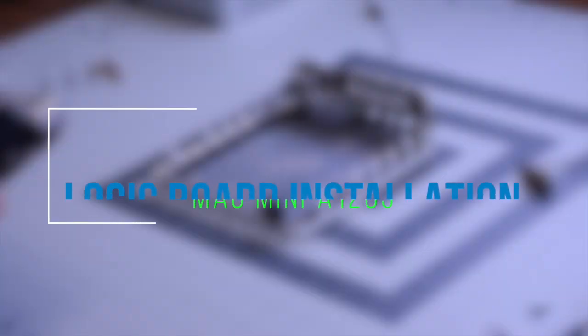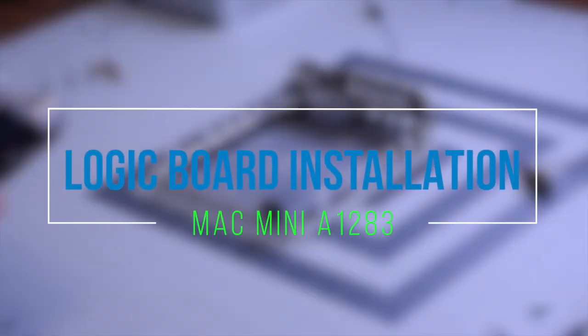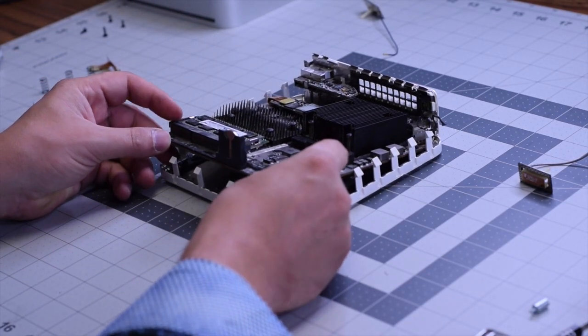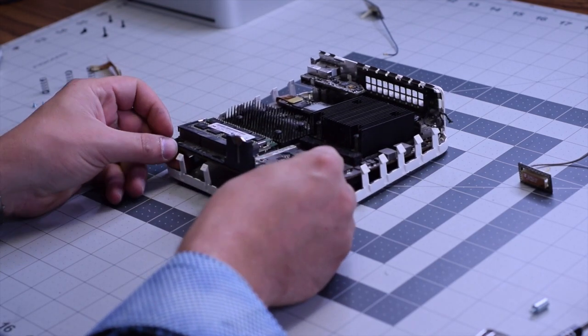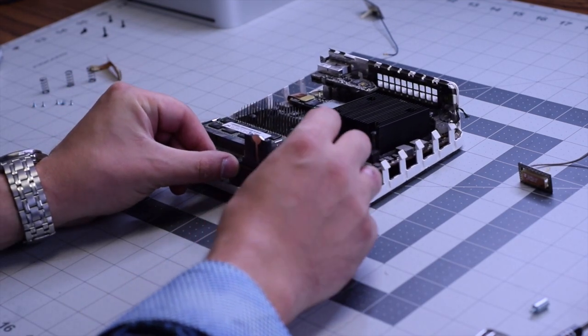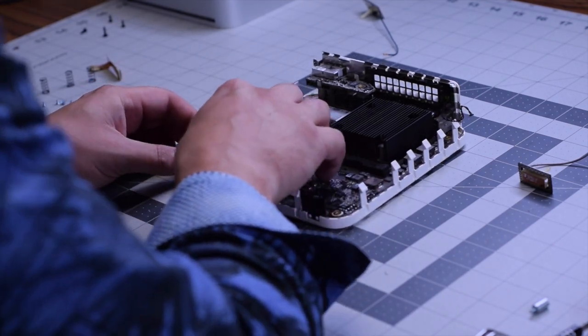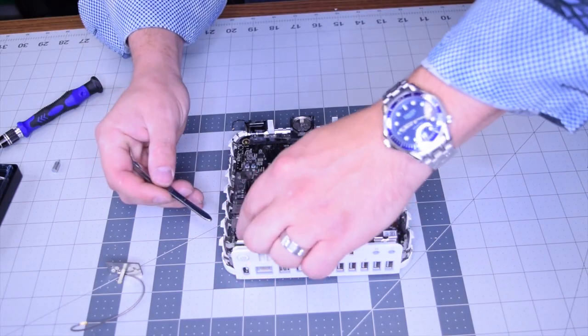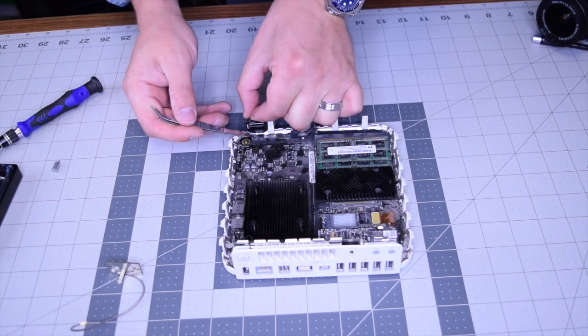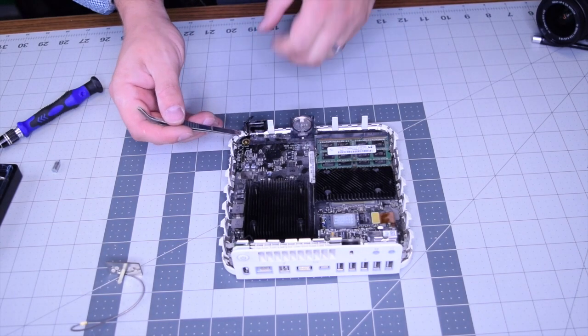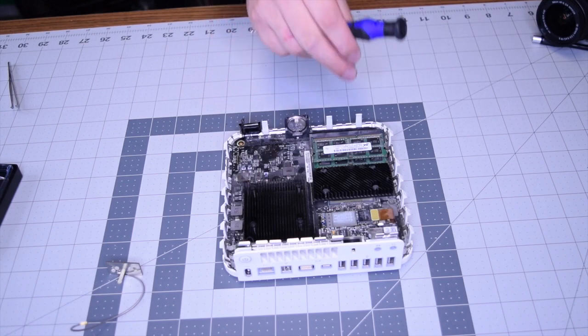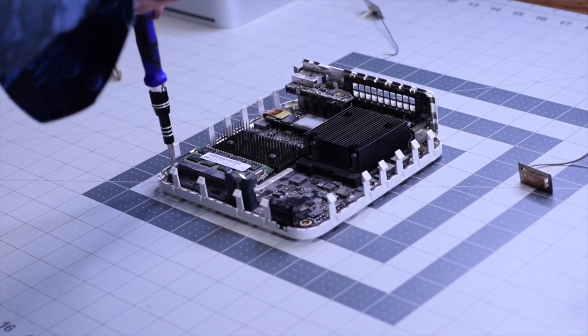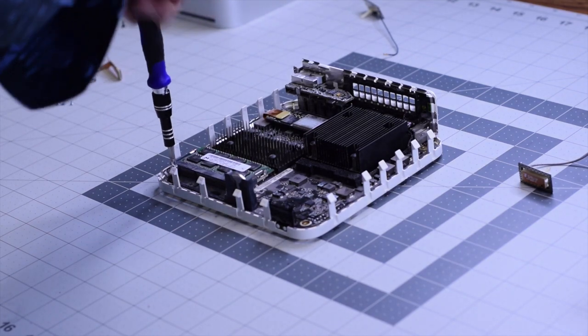Logic board installation: Reinstalling the logic board, go ahead and just push it right into its socket and lay it down. Make sure that all the holes for the screws line up. Go ahead and reconnect the power button first. With the power button reconnected, go ahead and reconnect the IR cable connection. Now go ahead and place back the T15 post on the rear left side of the logic board.